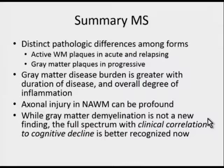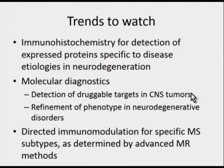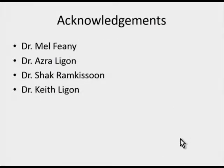While gray matter demyelination is not a new finding, the full spectrum with its clinical correlation to cognitive decline is much better recognized now. In closing, trends to watch include: immunohistochemistry becoming increasingly important for detection of expressed proteins specific to disease etiologies in neurodegeneration; molecular diagnostics detecting druggable targets in CNS tumors and refining phenotype in neurodegenerative disorders; and directed immunomodulation for specific MS subtypes determined by advanced MR methods, which may reflect what's actually occurring in the gray and white matter. I want to acknowledge the assistance of my colleagues Dr. Mel Feeney, Dr. Azra Ligon, Dr. Shaq Ramkasun, and Dr. Keith Ligon. Thank you very much.